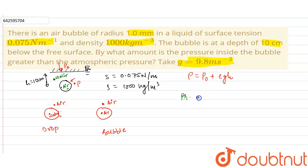Now the pressure inside the bubble will be P' = P + 2S/r.